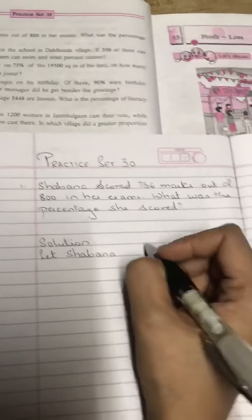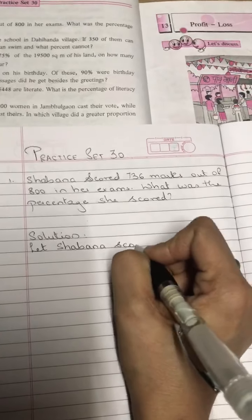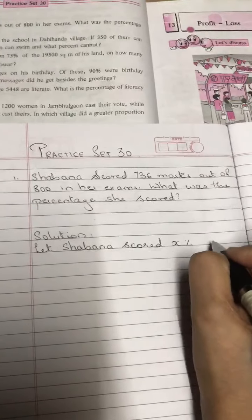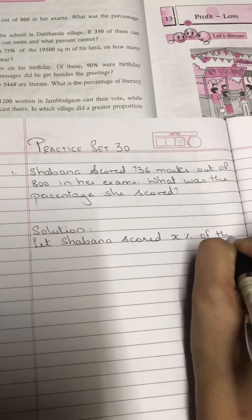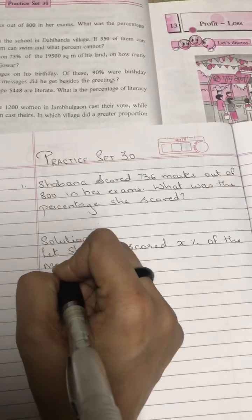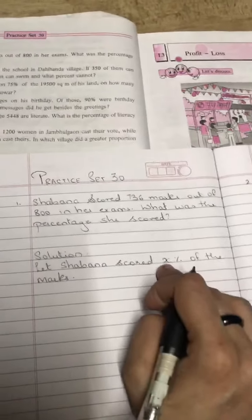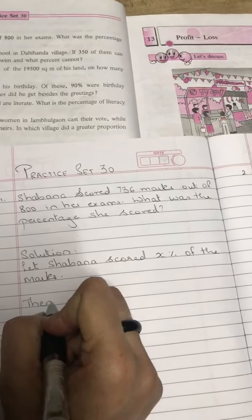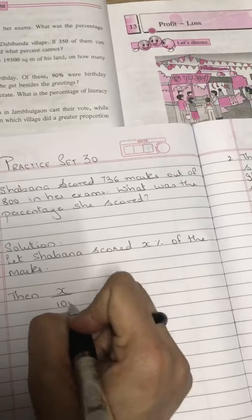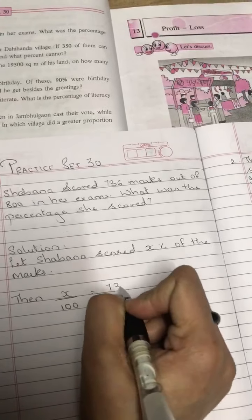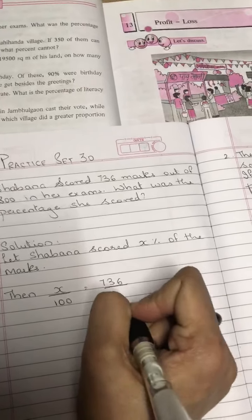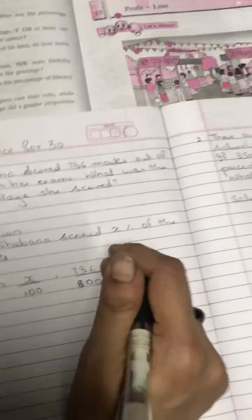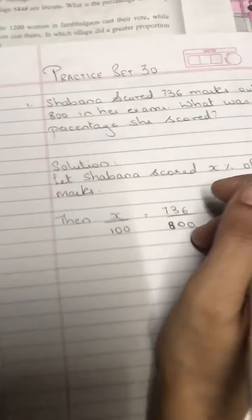Let Shabana scored x percent of the marks. As we don't know how much percentage, so we give percentage as x. Then we make a ratio. Then x upon 100 is equal to 736 upon 800. This is the ratio that we made.